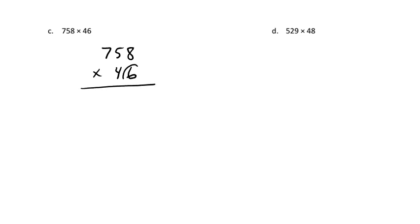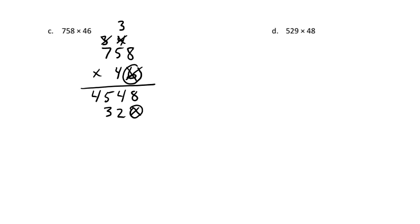Next: 758 times 46. Pause and try it yourself. Working with 6 first: 6 times 8 is 48, carry the 4; 5 times 6 is 30 plus 4 is 34, carry the 3; 7 times 6 is 42 plus 3 is 45. Put a 0 as placeholder. Now the 4: 8 times 4 is 32, carry the 3; 5 times 4 is 20 plus 3 is 23, carry the 2; 7 times 4 is 28 plus 2 is 30. Adding together: 34,868.